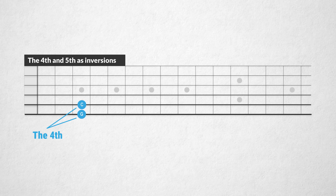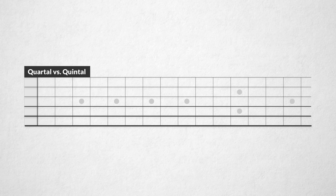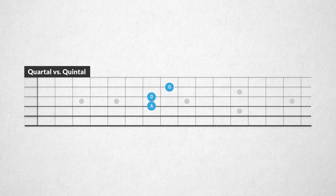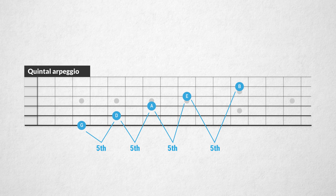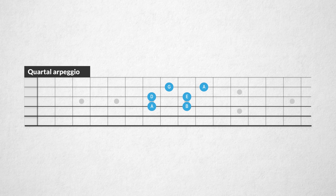Fourths and fifths are quite the same intervals — they are inversions of each other and have a very similar sound. Every quartal chord can be rearranged as a quintal chord containing the same notes, but now the intervals are fifths. Starting on A, we have the quartal chord A, D, and G. Rearranging the notes to G, D, and A results in a quintal chord — the sound is more open than the quartal version. Here I'll use a four-voice quintal arpeggio starting on G, followed by quartal arpeggios in the G major scale over the A minor 7 chord.